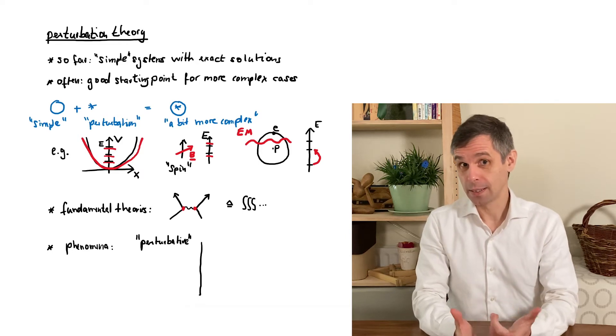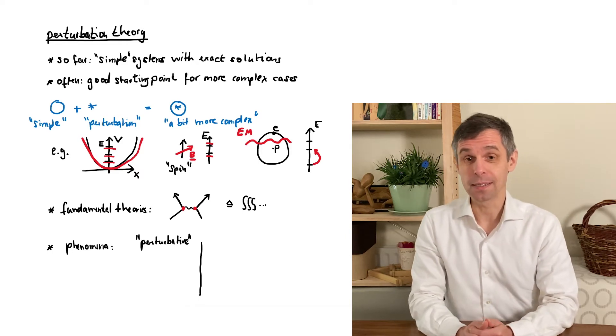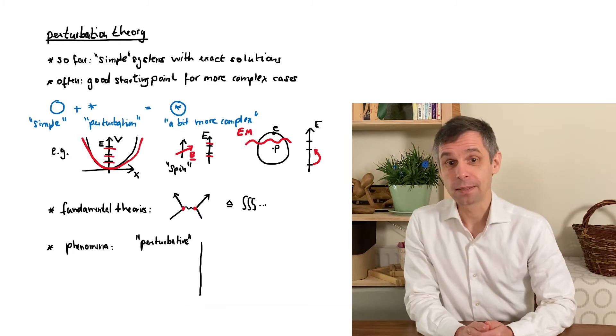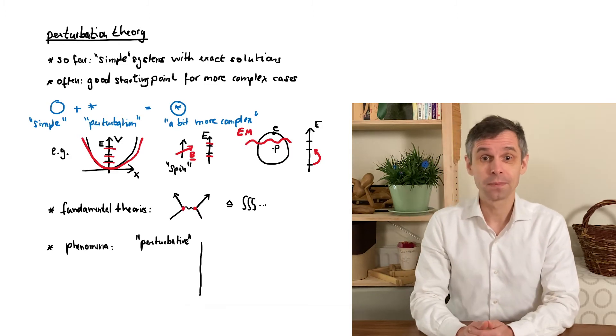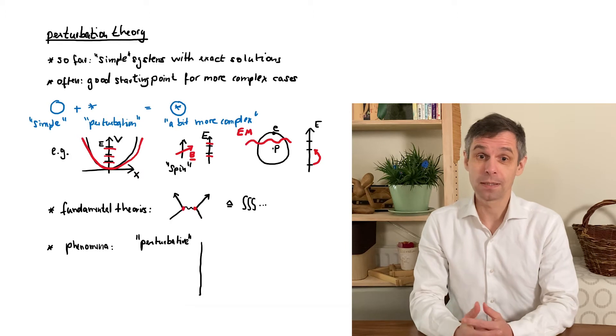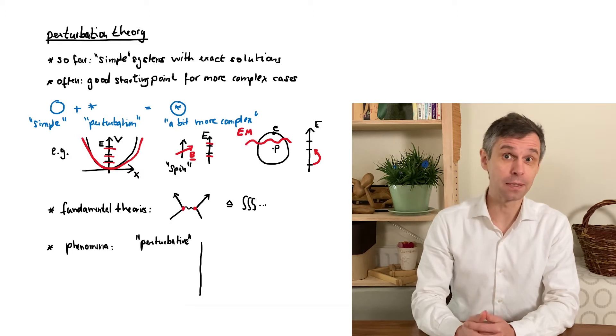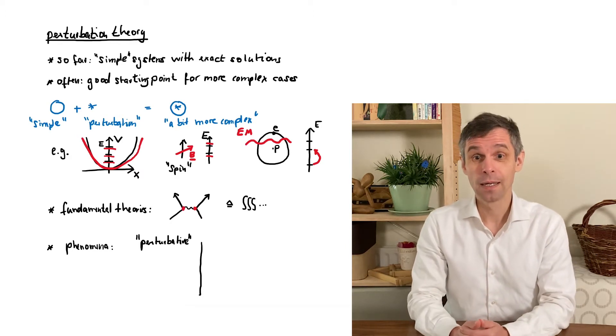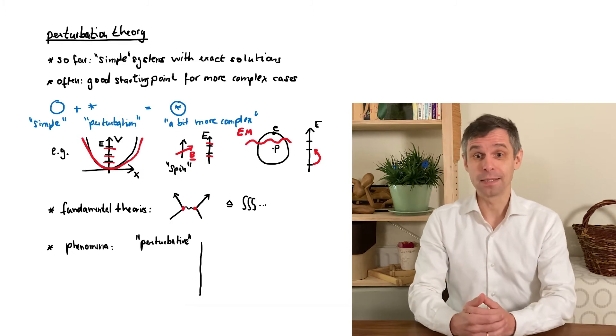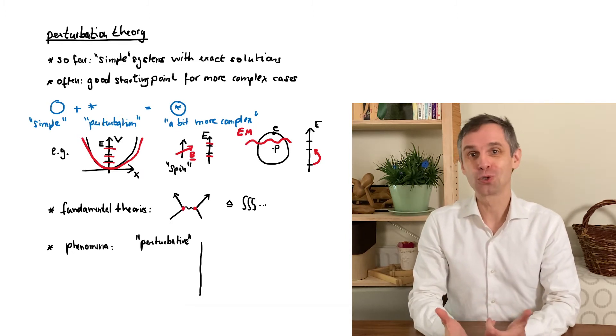Electrons moving through a clean semiconductor are an interesting example. They really interact with each other and with the solid, but you can conveniently capture this by describing them as particles with properties very similar to a normal electron, but with some changed characteristics such as their mass or the way their spin responds to magnetic fields.